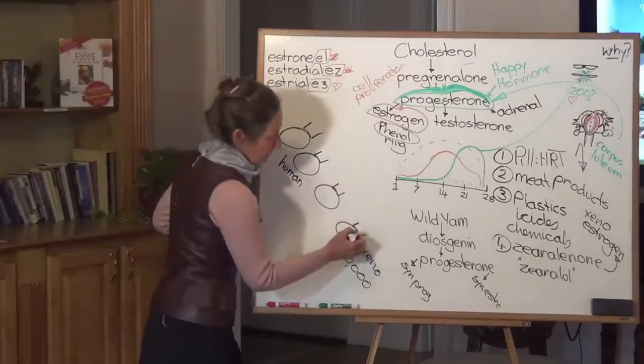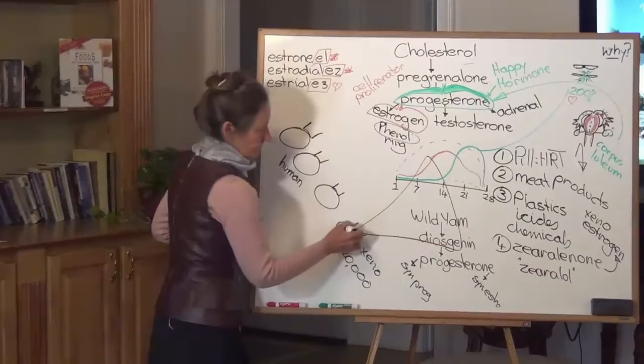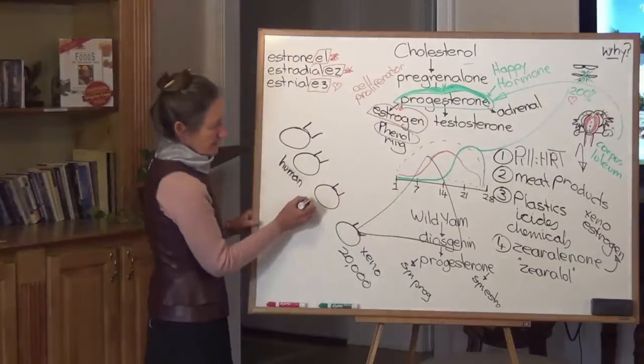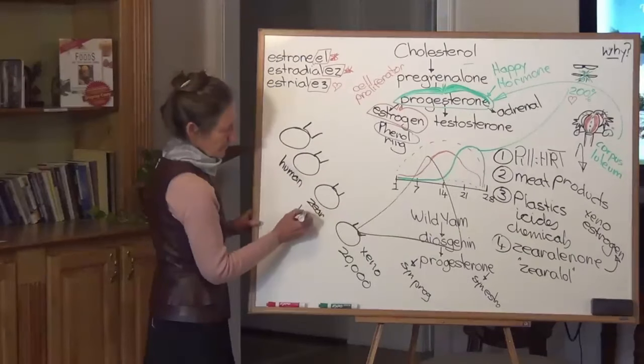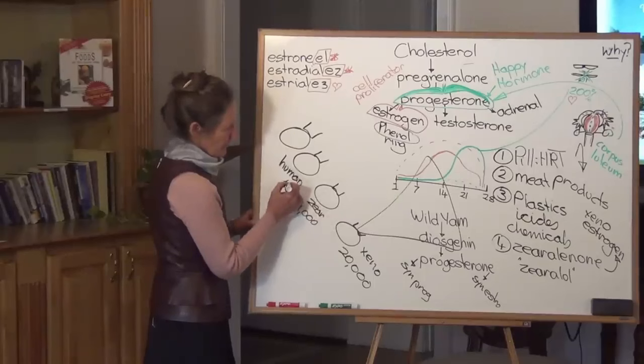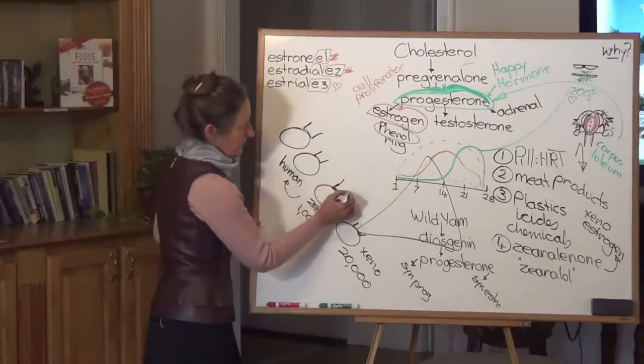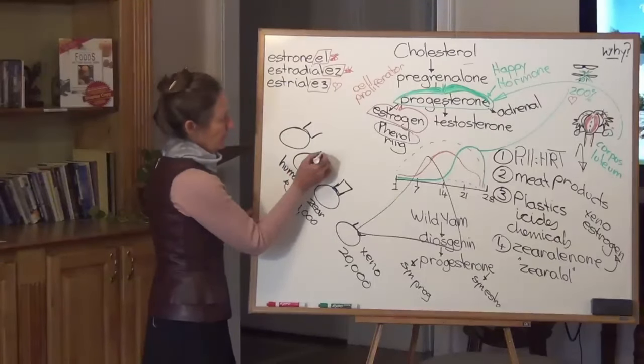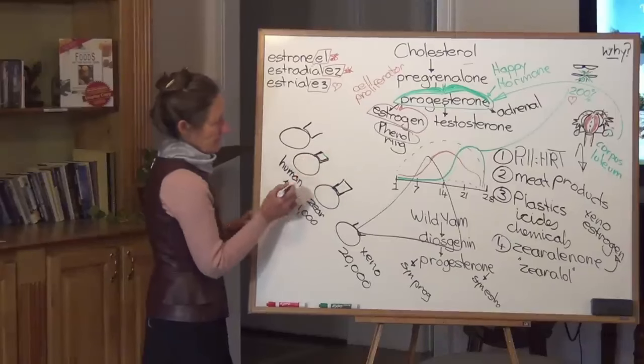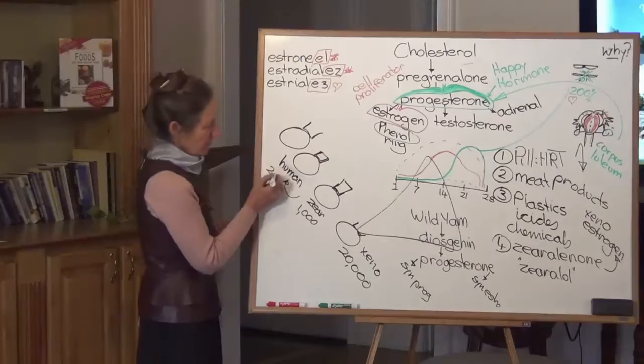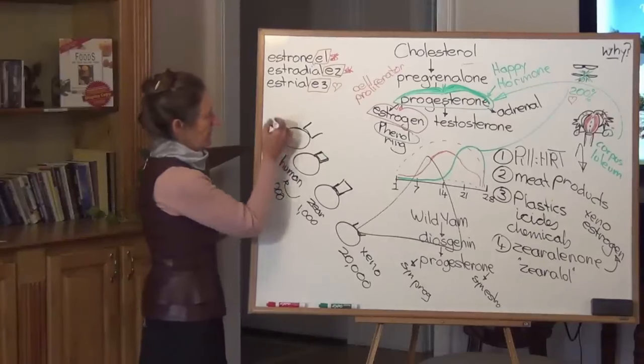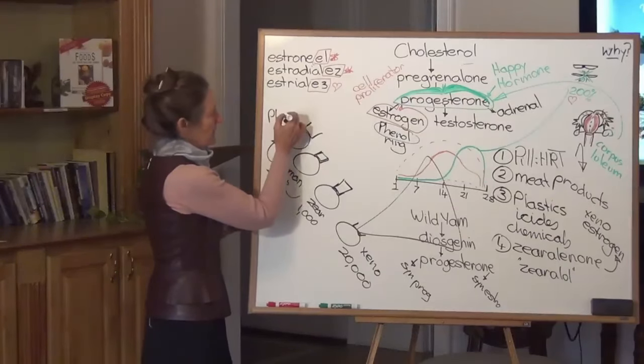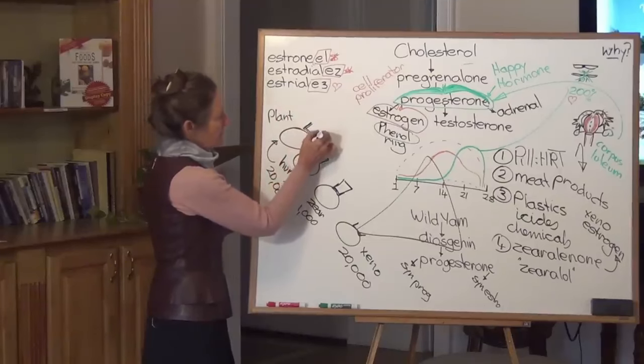So I'm going to show you four different types of estrogen. Now these are four cells and these are four estrogen receptor sites on the cell. So this one is the xenoestrogen. And xenoestrogen is 20,000 times stronger than the plant. So there's the plant there. So sorry, I've made a mistake there. That's human.